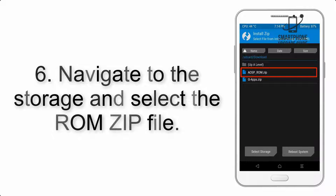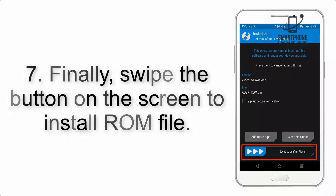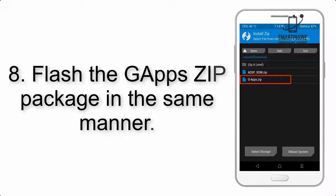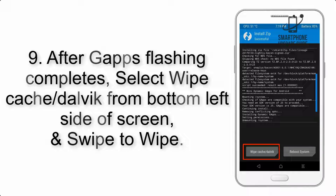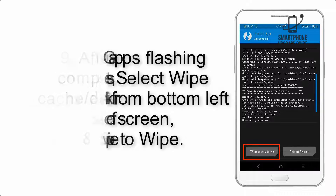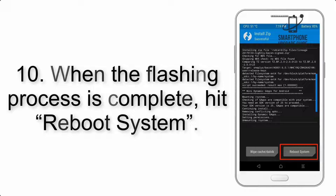Step 5: Go back to the recovery main screen and tap the Install button. Step 6: Navigate to the storage and select the ROM zip file. Step 7: Swipe the button on the screen to install the ROM file. Step 8: Flash the GApps zip package in the same manner. Step 9: After GApps flashing completes, select Wipe Cache and Dalvik from the bottom left side of the screen and swipe to wipe.